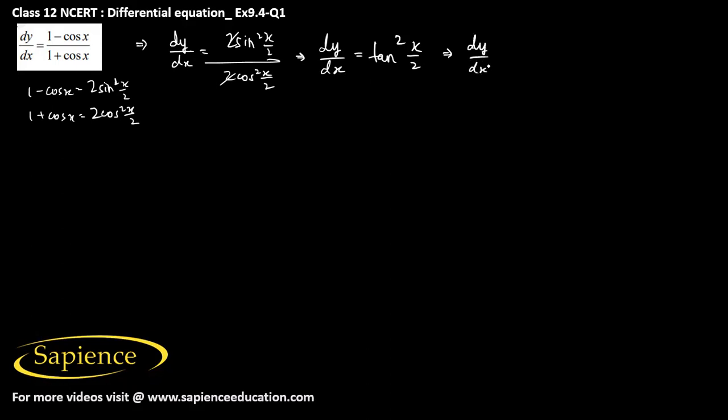Now this dy/dx, this tan² x/2, I can write it as sec² x/2 minus 1. Therefore dy will be equal to sec² x/2 into dx, then minus dx.